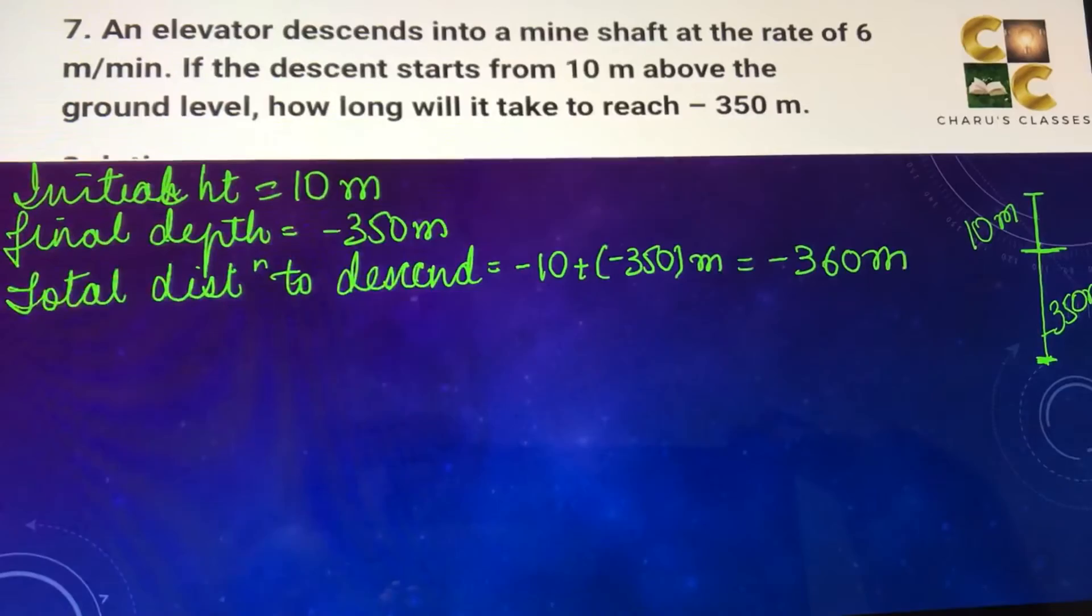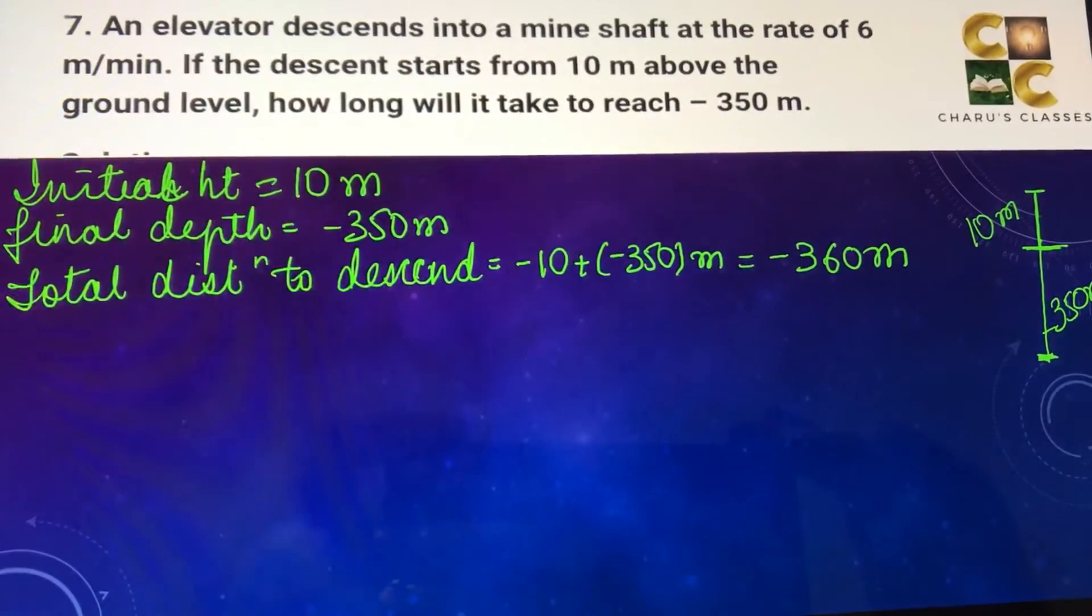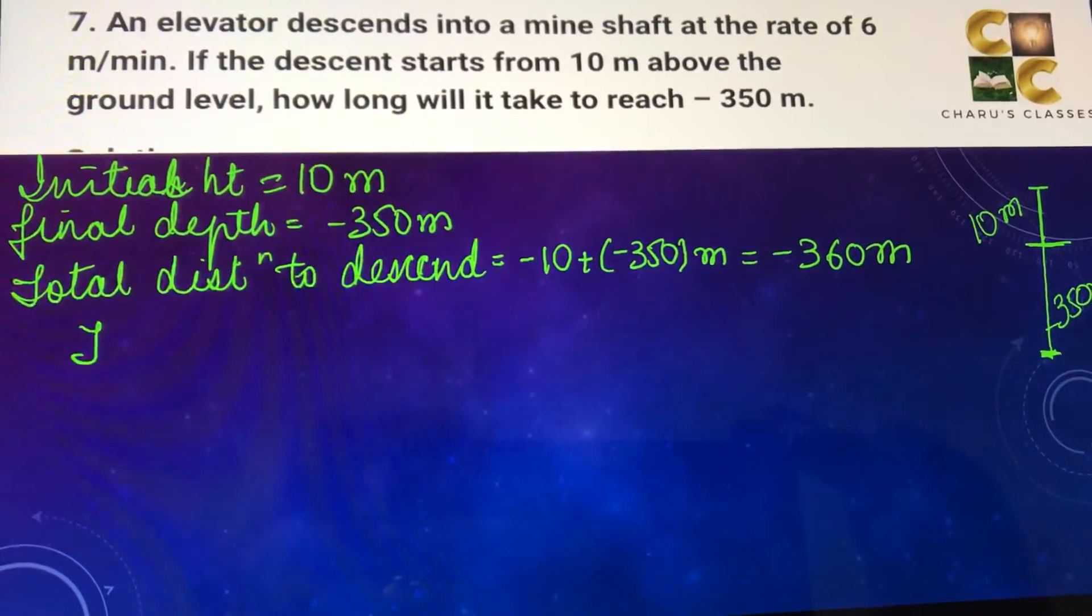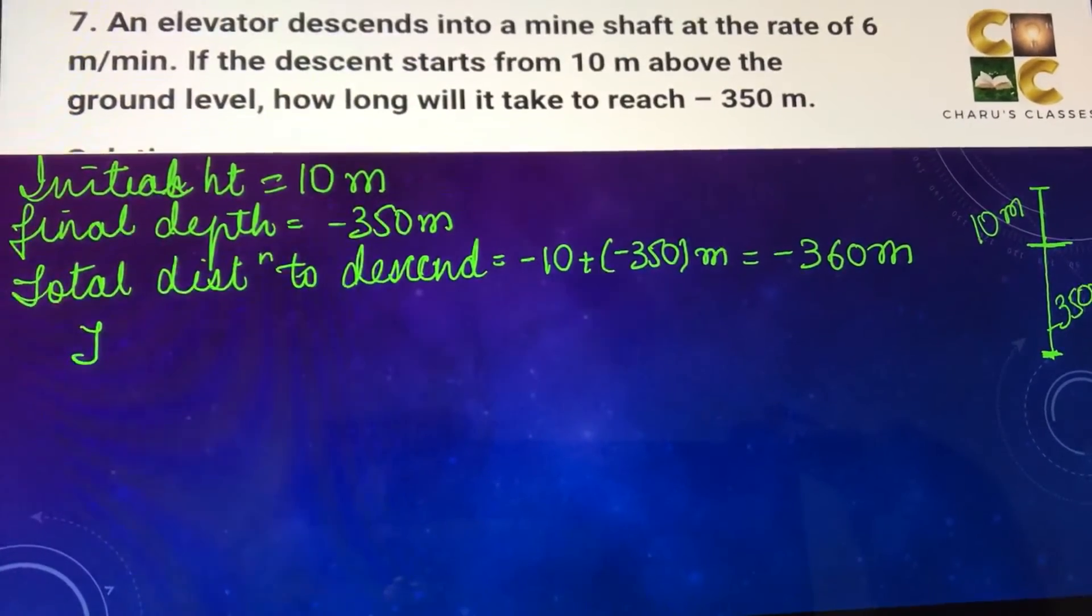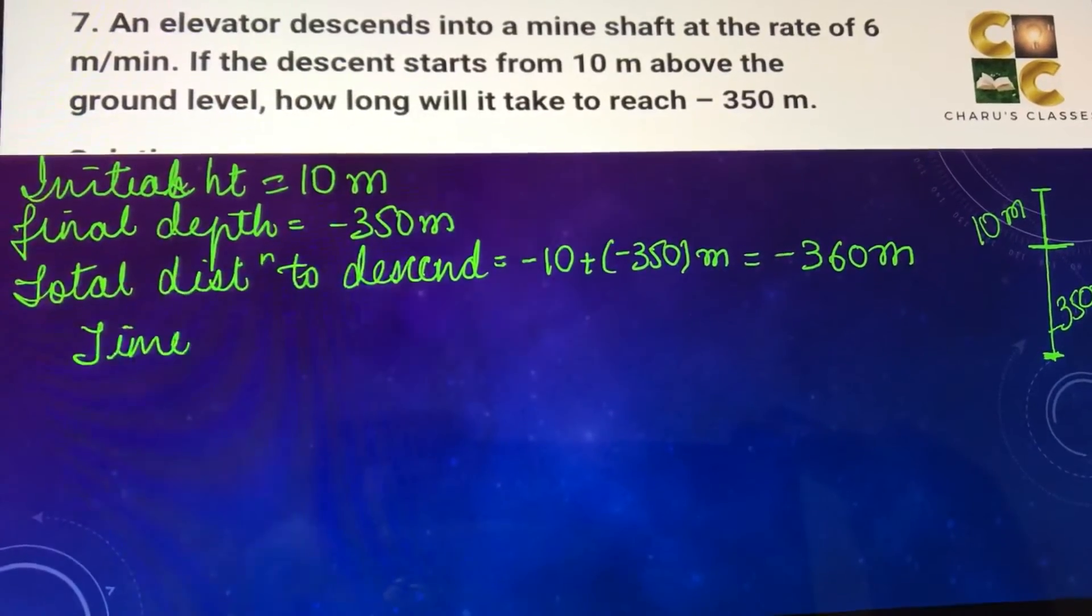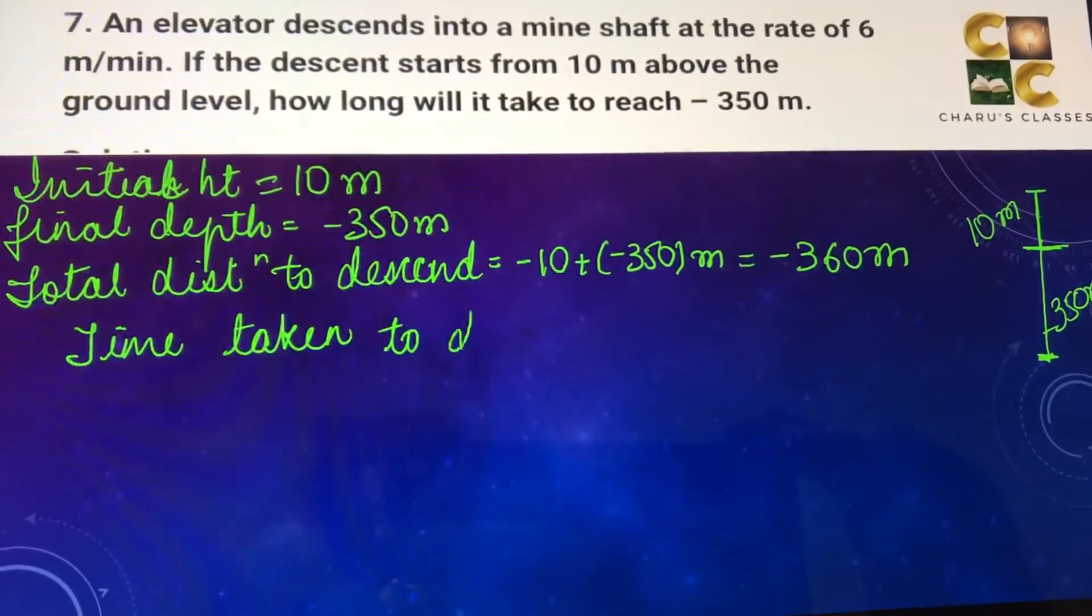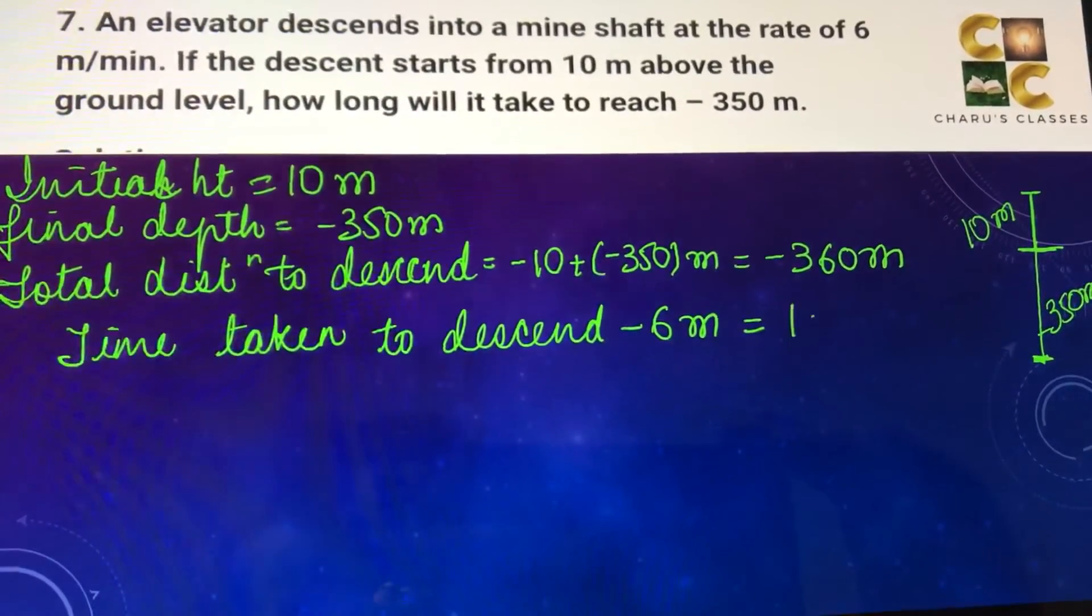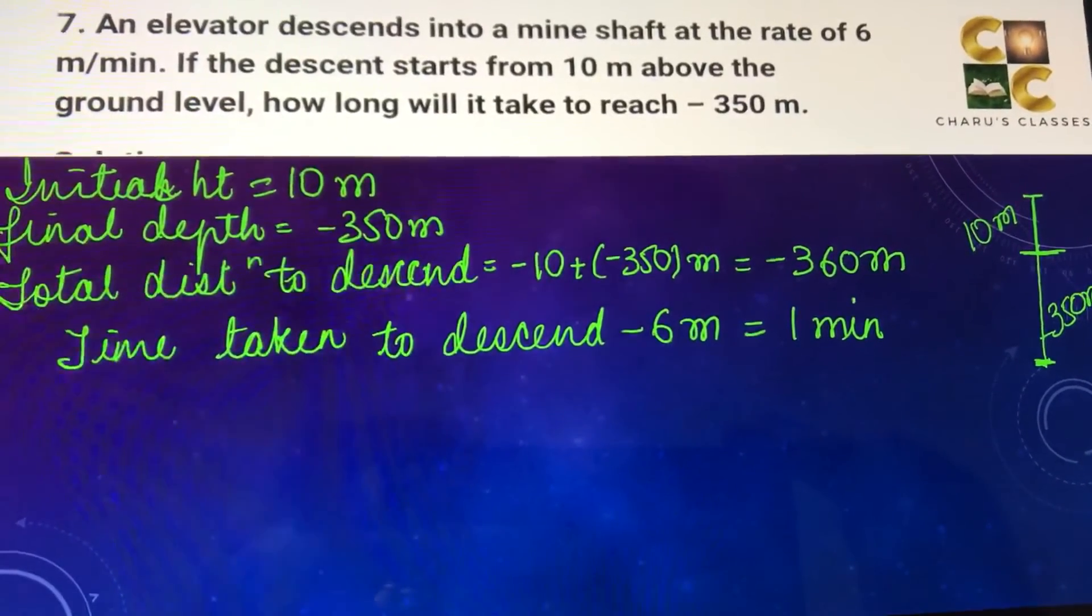This is the total distance which the elevator has to travel. Now the rate is given as 6 meters per minute but it is the rate of descent. So time taken to descend minus 6 meters is equal to 1 minute, because it is given 6 meters per minute.